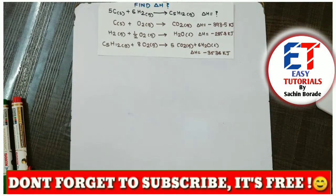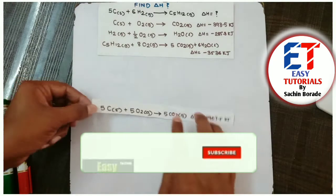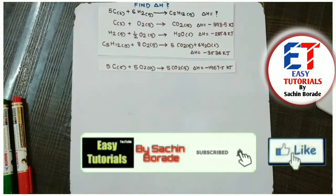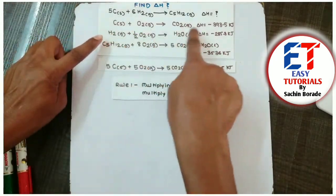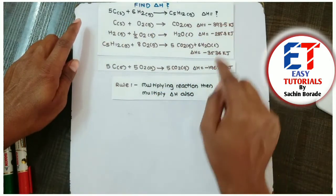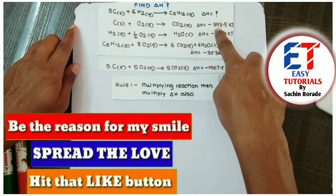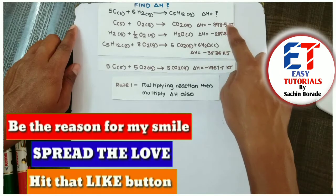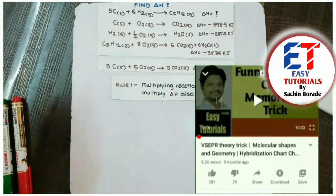So our reaction will be like this because we followed the rule: if you are multiplying the reaction, the total reaction, then we have to also multiply delta H. So initially delta H was minus 395.93.5. Now it is minus 1967.5.